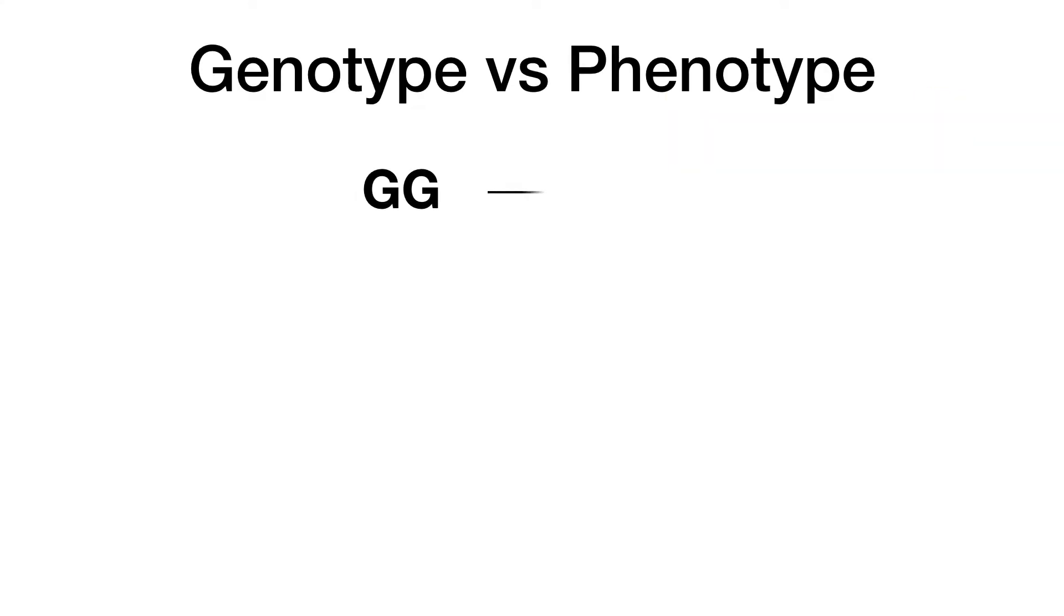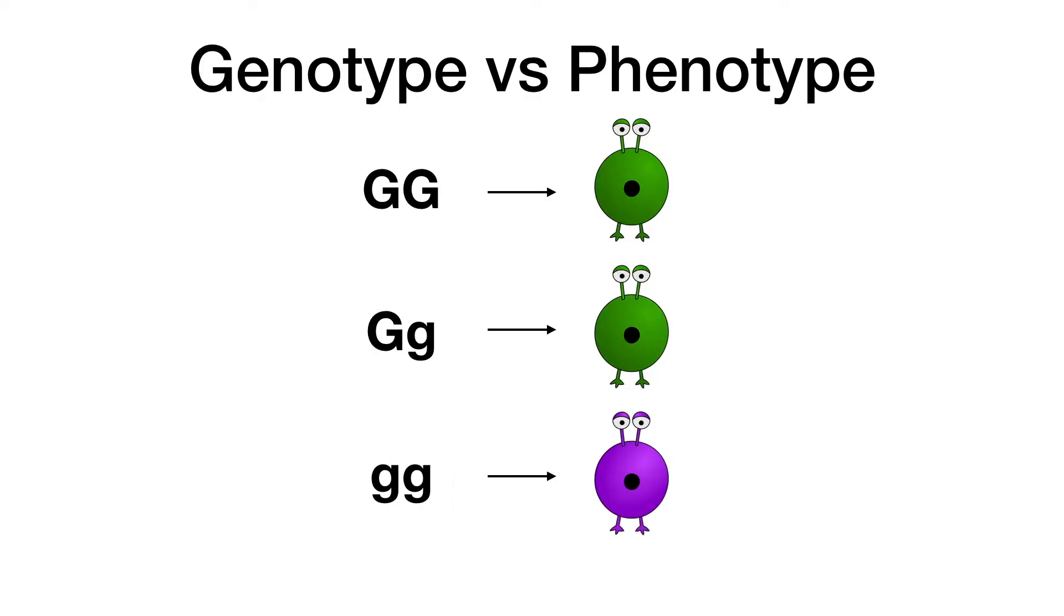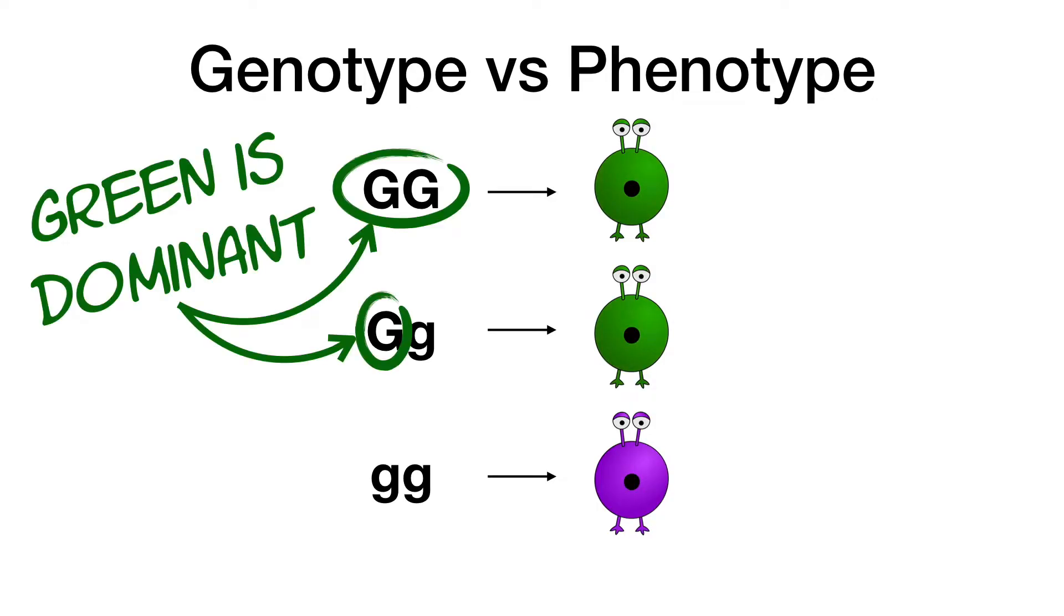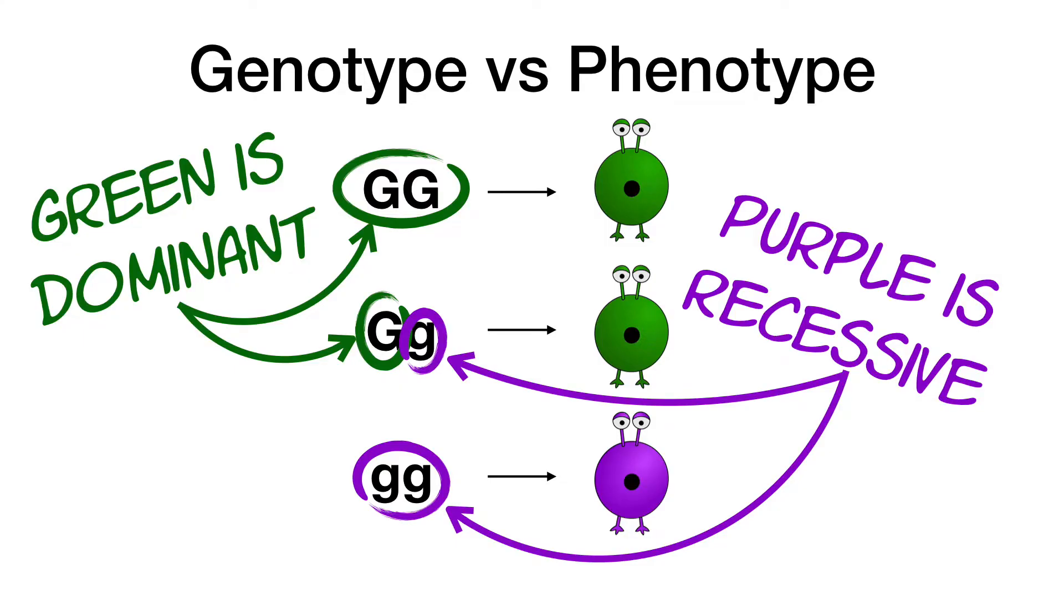When a gene is dominant, you only need one copy to see the trait. When a gene is recessive, you will only see the corresponding trait if the dominant gene is absent. In the example of our aliens, green is dominant, and purple, represented by the lowercase g, is recessive.